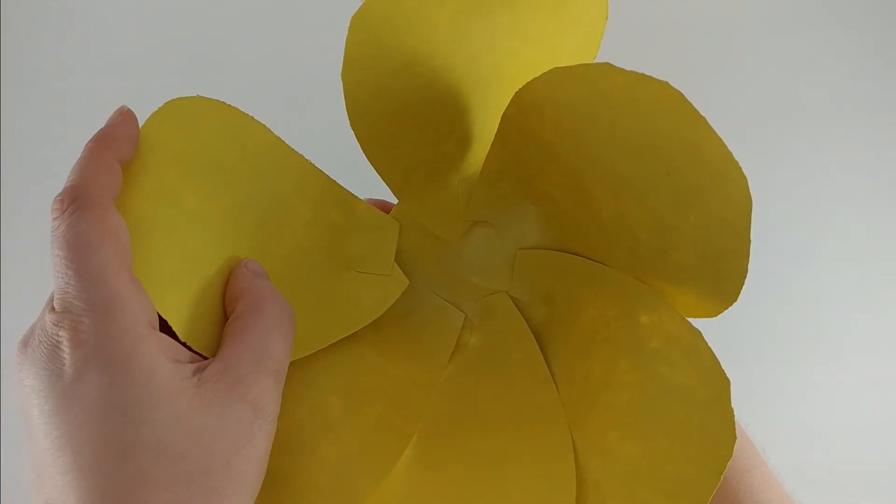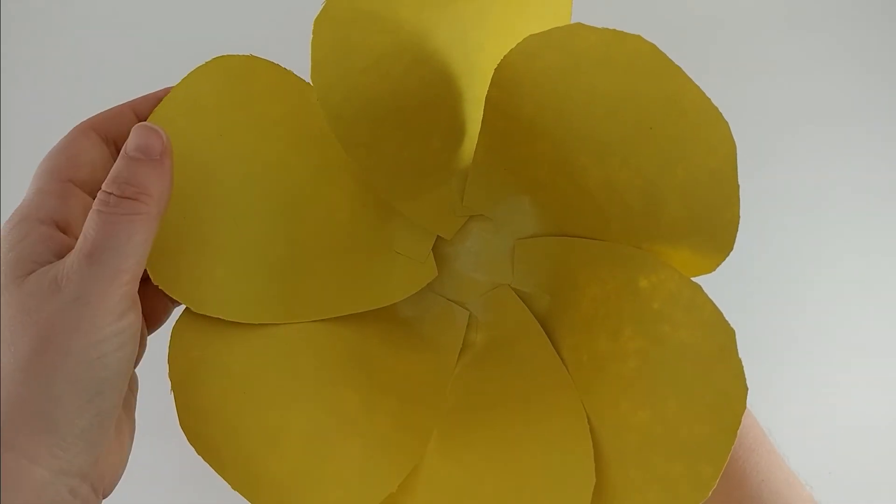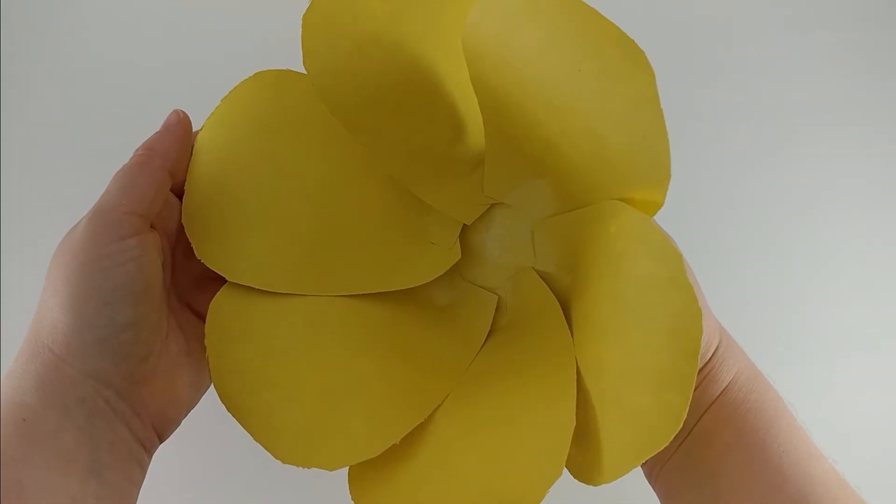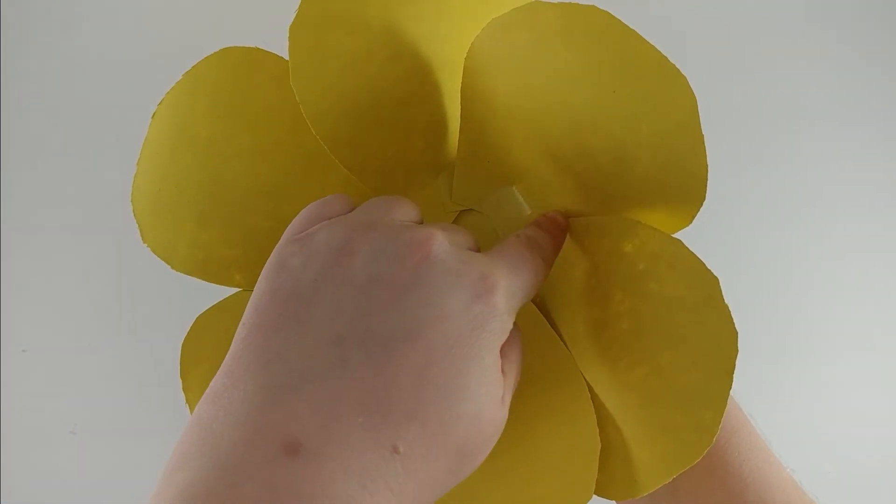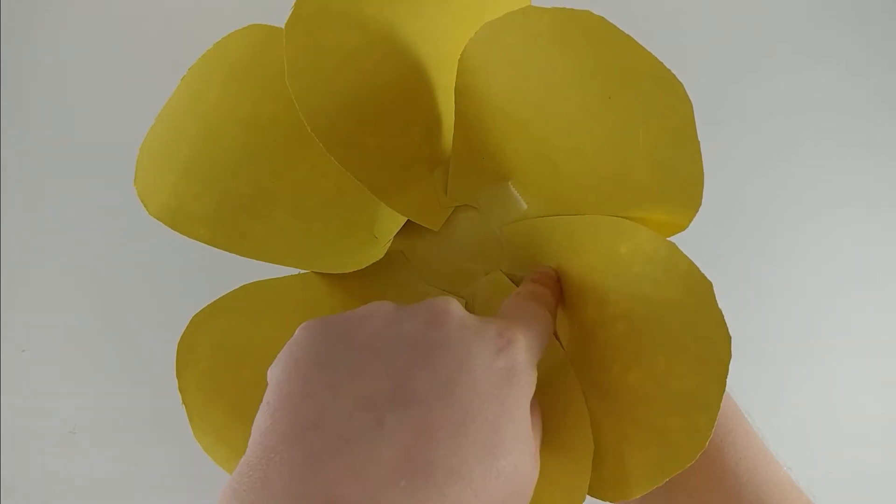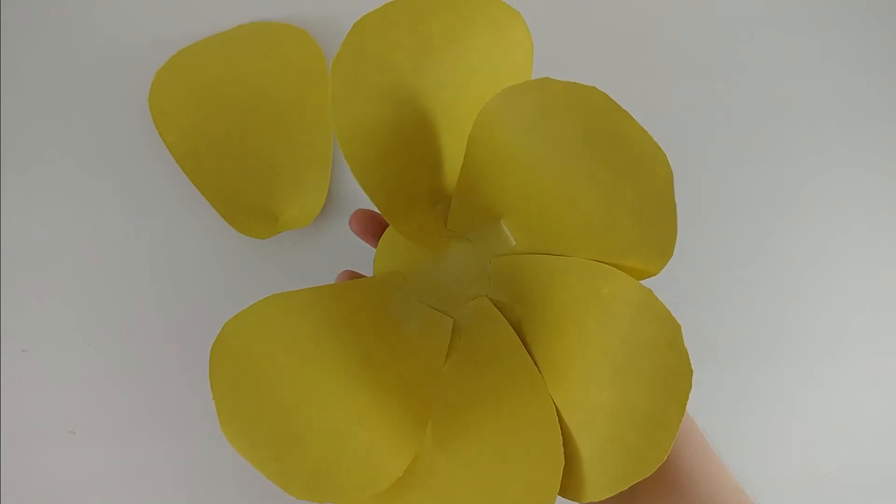And then this one is also going to be an over under. And that will complete the spiral so that I can run my finger around the base and not grab any of the pieces of paper petal.